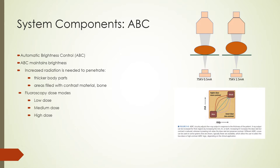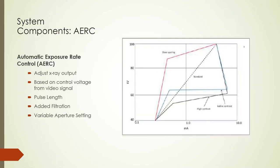Many fluoroscopy systems have several options to adjust dose and image quality, often labeled as low dose, medium dose, or high dose selections on the console — though these labels are manufacturer-specific. Automatic Exposure Rate Control or AERC is another name for ABC. AERC uses a sensor on the image intensifier input side or flat panel detector input side to maintain a constant input dose rate despite thickness or density variations. More advanced systems use a control voltage derived from the video signal to control dose rate. Additional control parameters include pulse length, added filtration, and variable aperture settings.